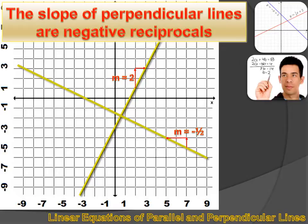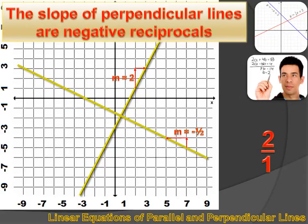What does negative reciprocal mean? Well, you know what negative means. If we're starting with 2, the negative reciprocal would have a sign of minus because the 2 is positive. And what's a reciprocal? The reciprocal of 2 is one half. A reciprocal is the same as flipping the fraction. If we start with one half, we just reverse the two and the one — we flip them — and the reciprocal of one half is two.